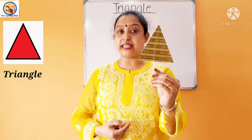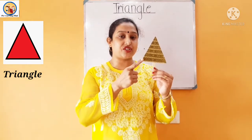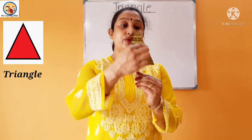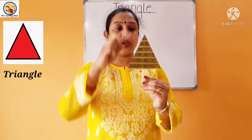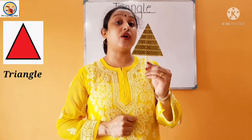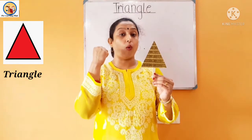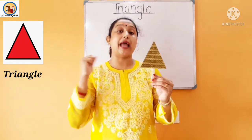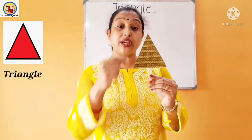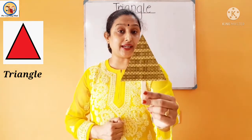Today we are going to learn about the triangle shape. The triangle shape has three sides — one, two, three. Repeat after me: one, two, three. And triangle has three corners — one, two, three. 'Tri' means three, and 'angle' means corner. So this shape has three sides and three corners. That's why this shape is called a triangle.